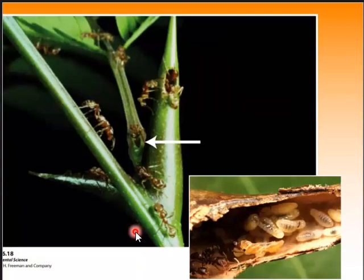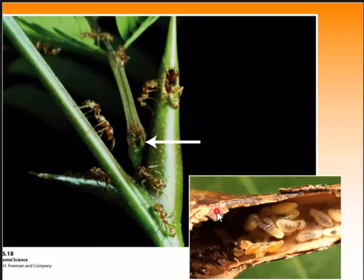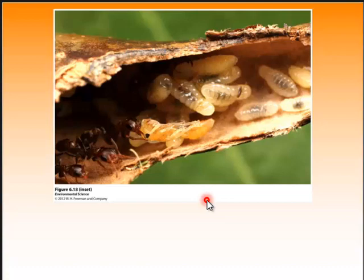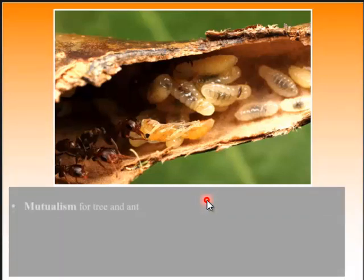Then we have symbiotic relationships. This is an acacia tree — acacia trees and ants have each evolved adaptations that enhance their interaction. The tree's thorns serve as a nest site for the ants, and this is a mutualistic relationship. The most important type of mutualistic interaction is the relationship between plants and their pollinators — birds, bats, insects. Plants need pollinators for reproduction; pollinators depend on plants for food. The ants protect the tree from herbivory, and the tree provides the nesting site and some sweet food. That's mutualism.